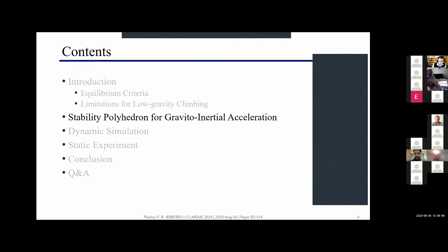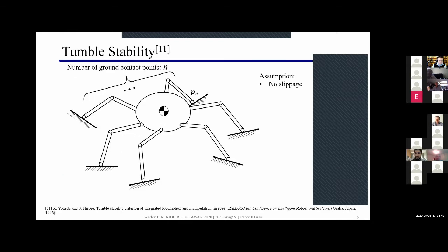Here I have the contents of my presentation and now I'll move on to the theory of the proposed method of the stability polyhedron. First I start by defining the tumble stability. We consider a robot with n contact points and assuming no slippage which is reasonable for the climbing robot's problems.